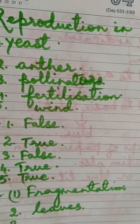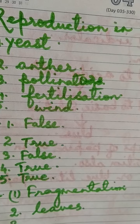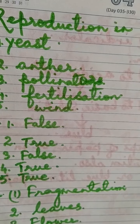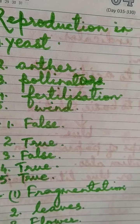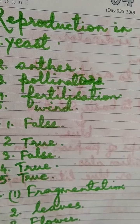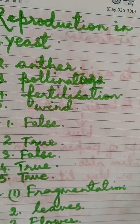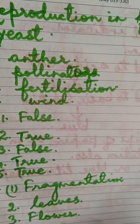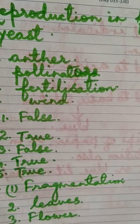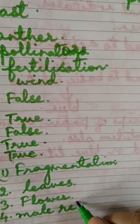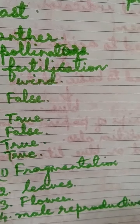Third question: the reproductive part of the plant for sexual reproduction — is it root, leaf, or stem? No, it is flower. The flower is the reproductive part of a plant for sexual reproduction. Fourth question: pollen grains contain the — what? They contain the male reproductive cells, as pollen is present in the anther, which is the male reproductive part of a flower. The answer is male reproductive cell.